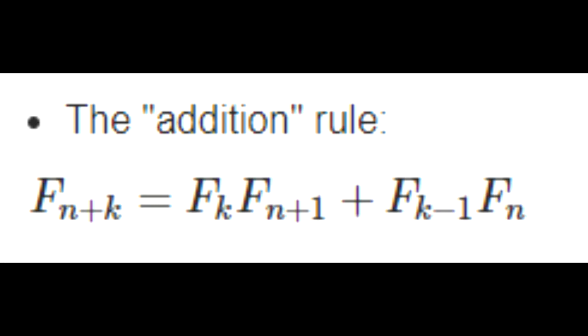I know this is like a handful, it's kind of confusing but yeah that's basically what the addition rule is. If I jump by k steps, the value will be the value at the kth term multiplied by the next term plus the k minus 1 term multiplied by the current term.